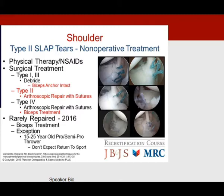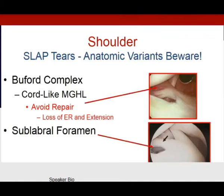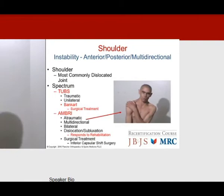Beware of anatomic variants in SLAP tear evaluation. A cord-like thickened middle glenohumeral ligament should not be repaired — doing so will cause loss of external rotation and extension. Also do not close a sublabral hole, as that is a normal anatomic variant.